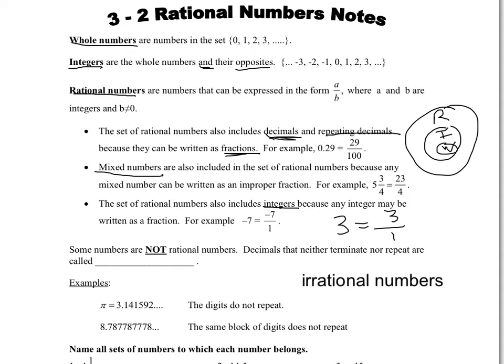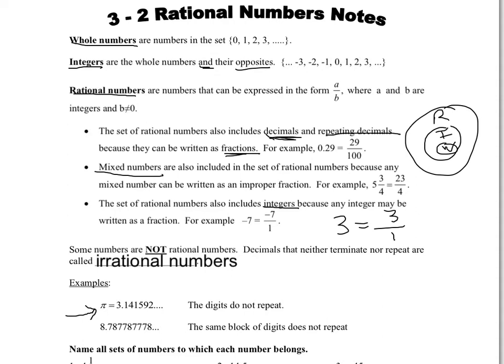Now, some numbers are not rational numbers. Decimals that neither terminate nor repeat are called irrational numbers. Some examples of irrational numbers would be pi, because pi goes on without end but it doesn't have any specific repeat or pattern to it. Like the number 8.78, then it goes 7, 7, 8, then 7, 7, 7, 8 — it has a pattern, but it doesn't have the same repeating pattern. It's not the same numbers repeating over and over again. So that's an irrational number.